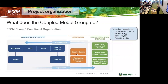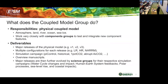The coupled group sits in the middle of the development process. We are part of the integration process and work very closely with the component groups who develop specific components, as well as with the science group who develop and execute the science simulation campaigns. The responsibility of the coupled group is to develop the physical coupled model, which includes atmosphere, land, river, ocean, and sea ice components. We work very closely with the component groups to test and integrate all the new components and features that come in for various versions.